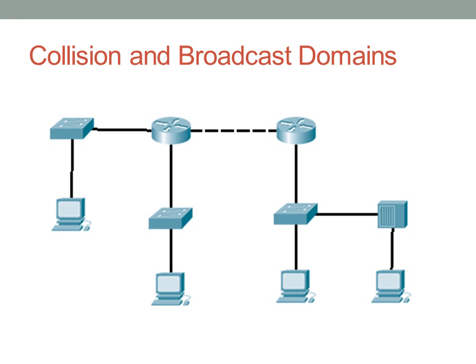Let's look at collision domains. Keep in mind that switches divide collision domains — every port on a switch is in a different collision domain. Looking at the switch on the upper left, there's a collision domain going down and one going to the right — that's two. Looking at the second switch below the left router, we have a collision domain above and below — two more, for a total of four.